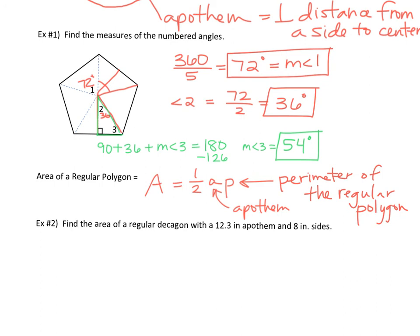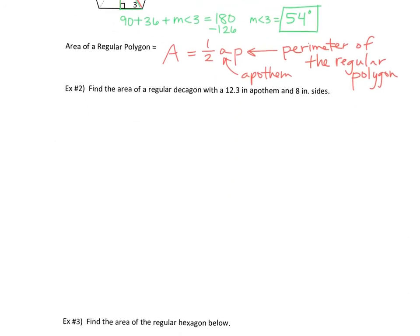So we're going to do a problem where you're not even going to see the figure, but you're going to have enough information to be able to find the area of some figure that they're talking about. One half aP. So here's what the problem says. Find the area of a regular decagon. What does decagon mean? 10 sides with a 12.3 inch apothem and eight inch sides.